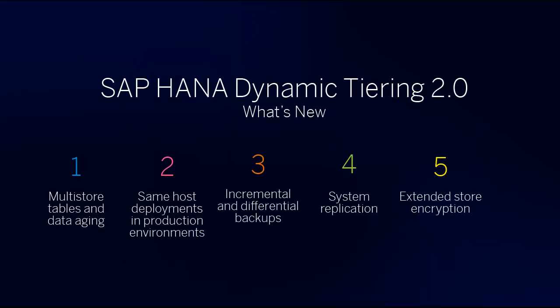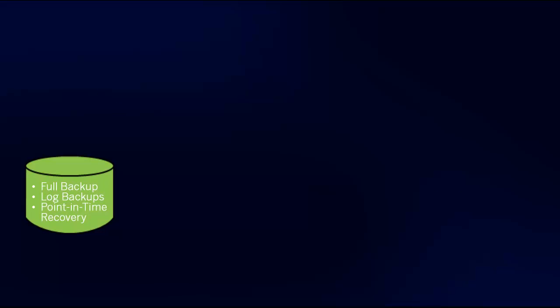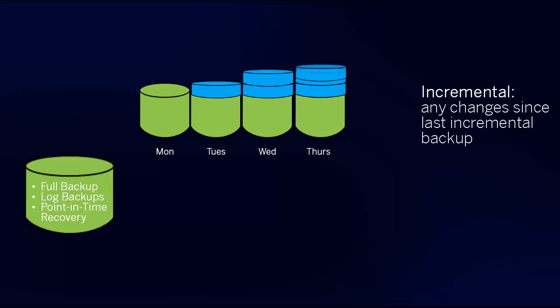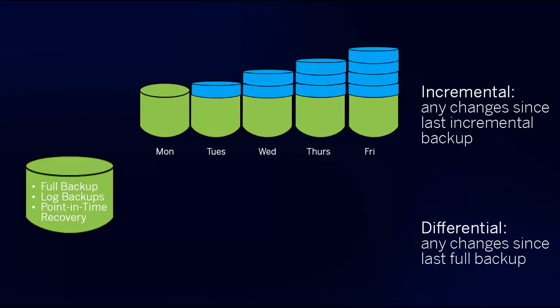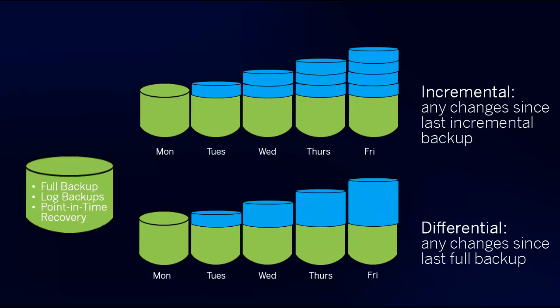Now let's look at the incremental and differential backups feature. Prior to 2.0, Dynamic Tiering supported full backups, log backups, and point-in-time recovery (PITR). Now it supports incremental backups — any changes since the last incremental backup — and differential backups — any changes since the last full backup. This reduces backup times and storage requirements.